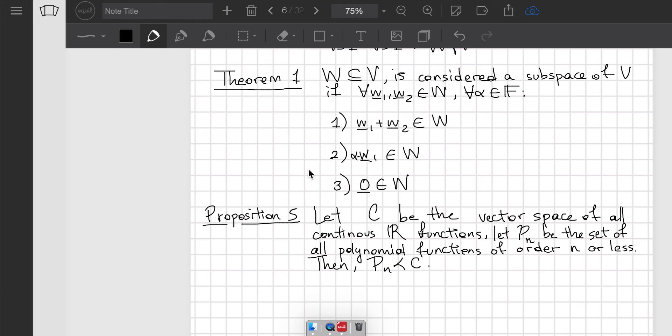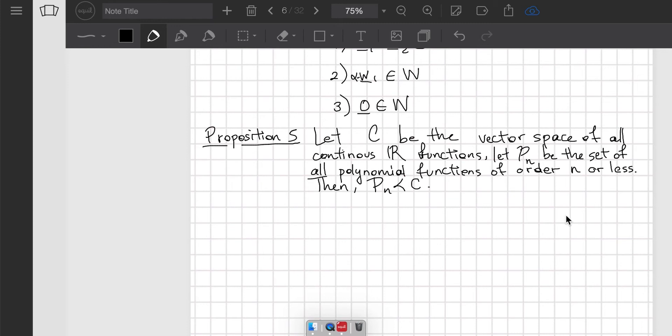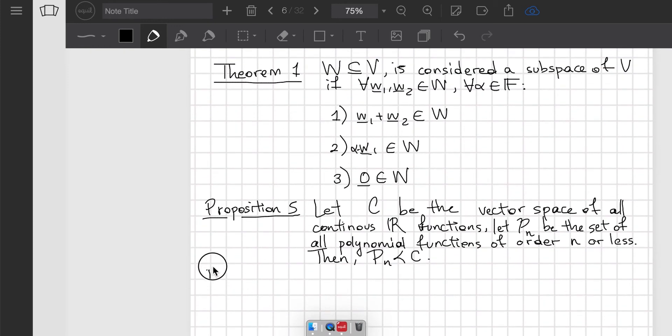Essentially we have to prove these three conditions, and we're going to assume that C is a vector space. We don't have to prove it, it's already given. Let's start the proof. The trick here is using the summation notation to write the polynomial function.